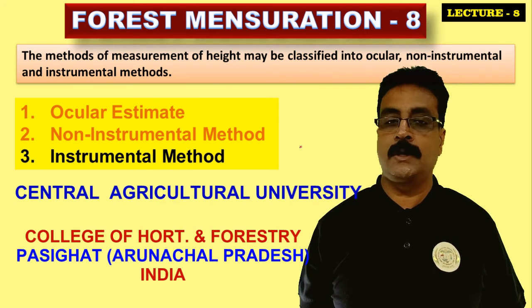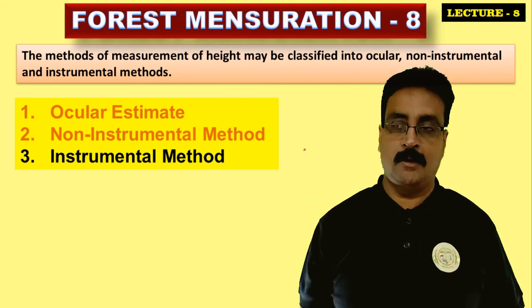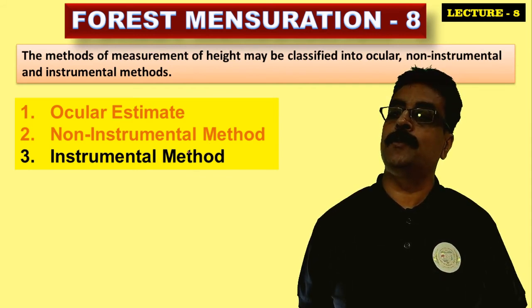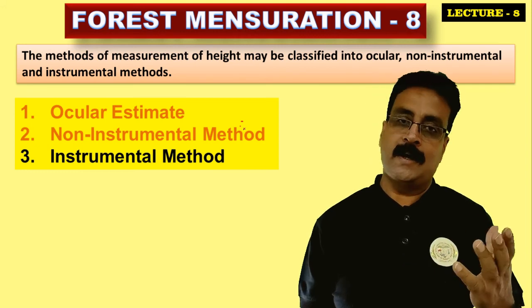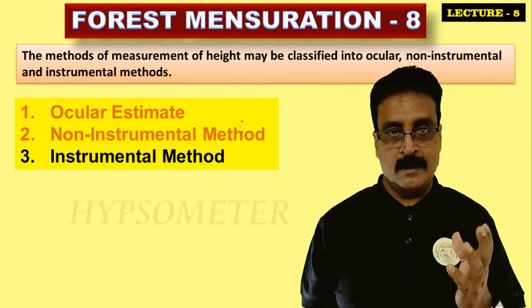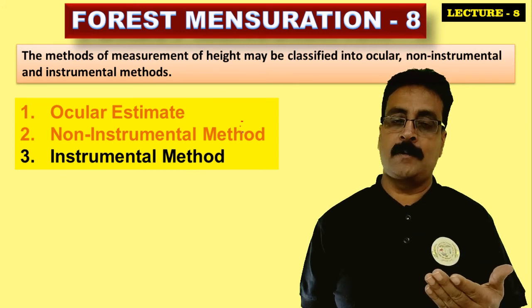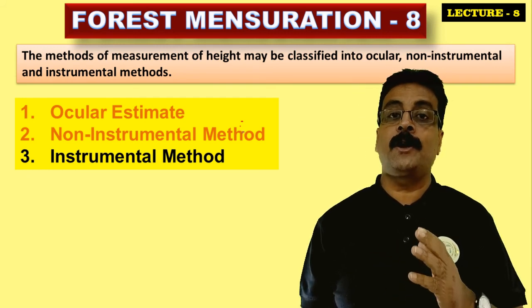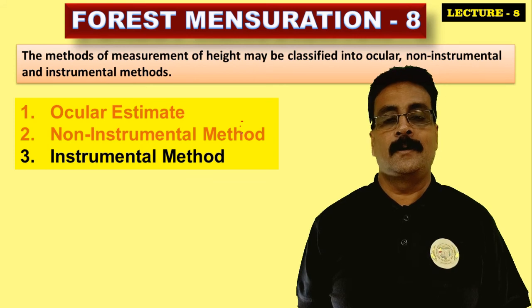In this video lecture, Forest Mensuration 8, we will study about the instrumental method. This instrumental method is very important as compared to ocular estimate or non-instrumental methods. In the previous lecture, Forest Mensuration 7, we studied about non-instrumental methods — how without an instrument a forester can measure the height. Here we will measure by hypsometers, which are based on the geometrical principle of similar triangles. We'll also study about instruments based on trigonometrical principles.